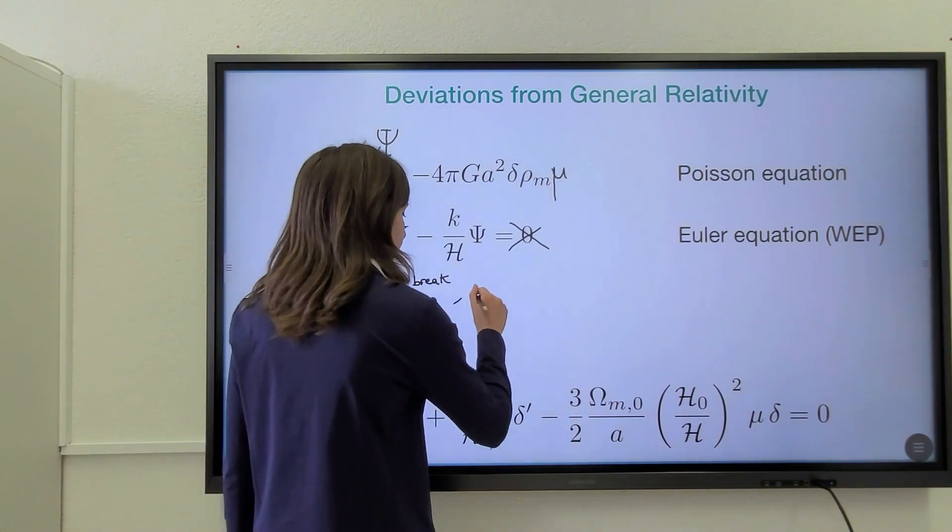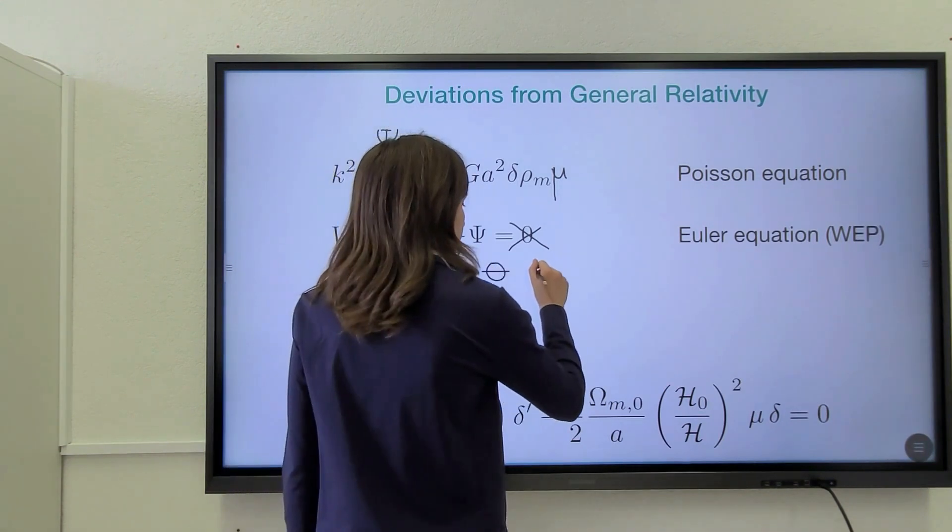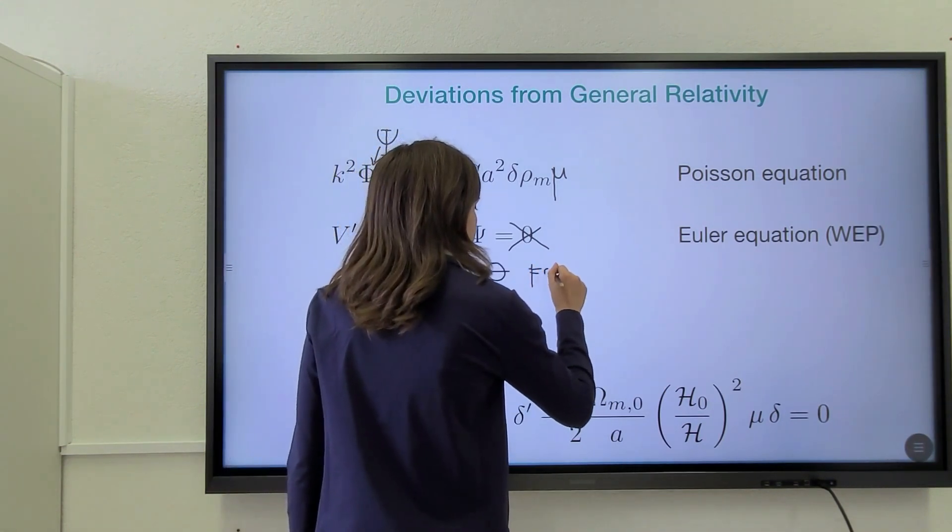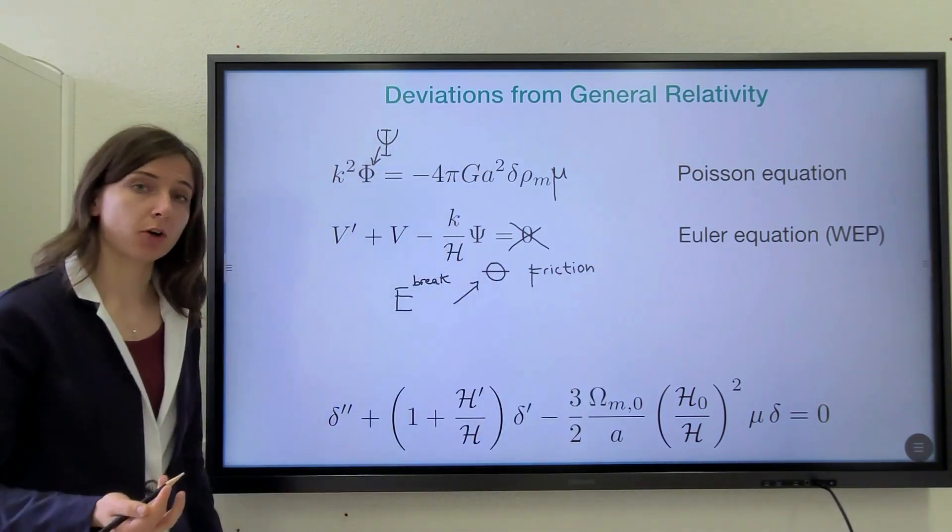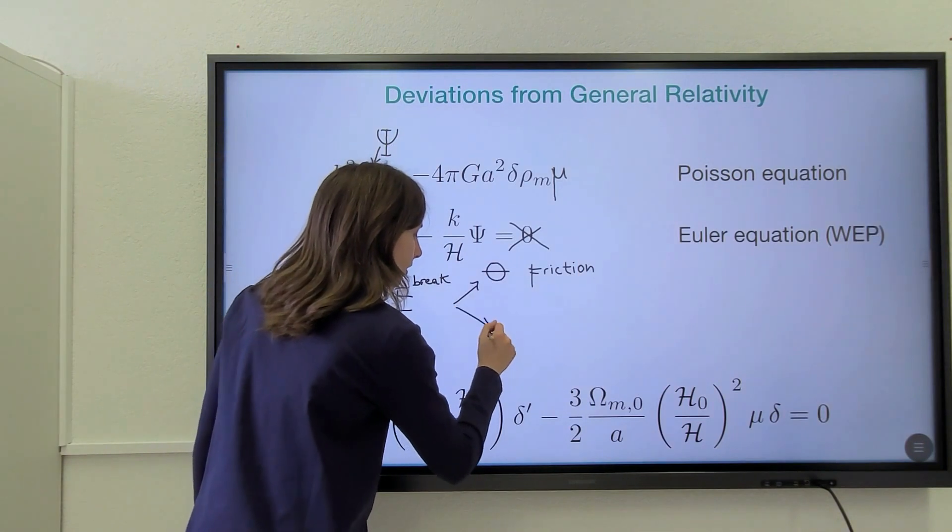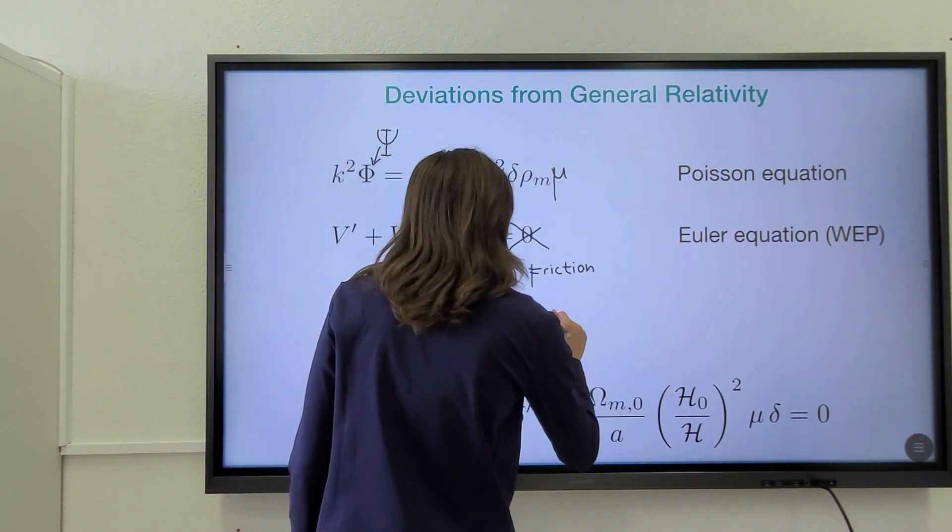On one hand, we have a term that contains a parameter theta that corresponds to friction acting on dark matter. And we then have a second term that contains a parameter gamma that encodes a fifth force acting on dark matter.